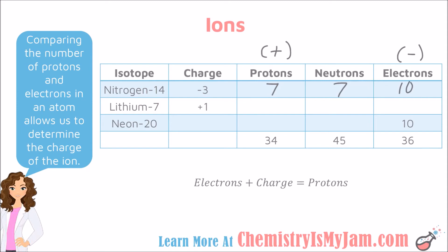The next example is lithium-7 with a charge of positive 1. Lithium is element 3 on the periodic table, so there must be 3 protons. The number of neutrons I am going to get by saying mass number minus protons: 7 minus 3 means that there are 4 neutrons. For the number of electrons, I am going to compare the charge and the number of protons. The fact that there is a charge of plus 1 means that there must be one more proton than there is electron, so in this case there are 2 electrons. Using the formula: electrons plus charge equals protons — the charge was positive 1 and the number of protons was 3, so you will find out that there are 2 electrons.